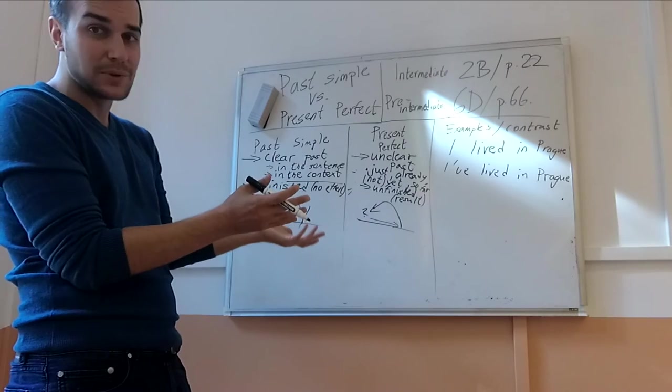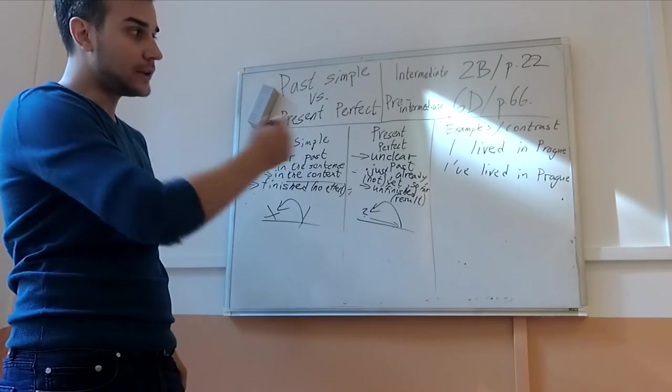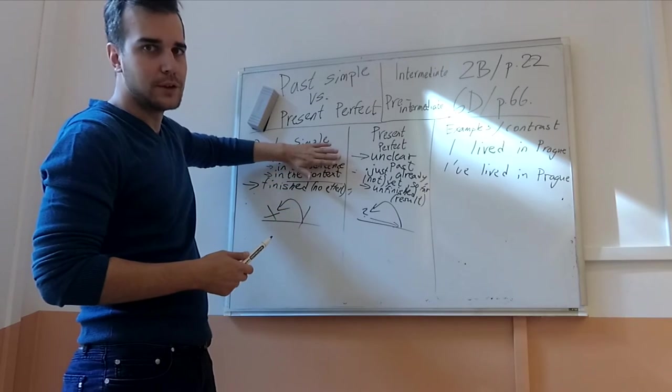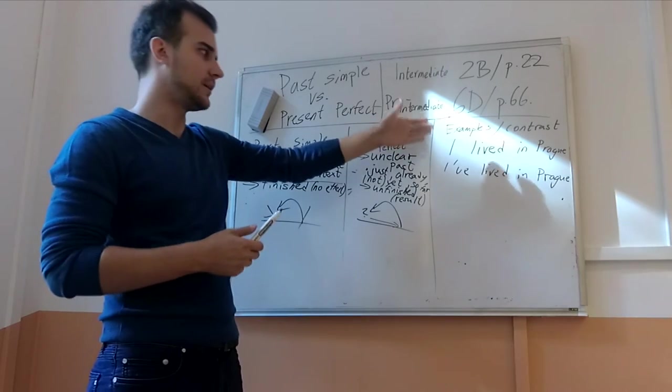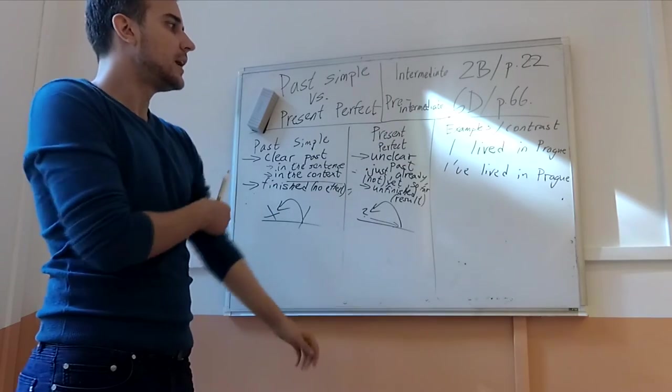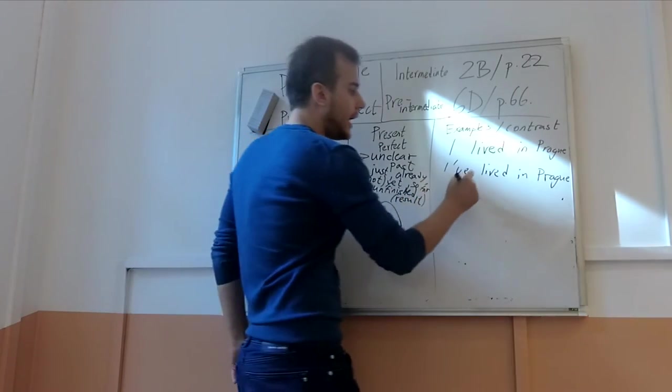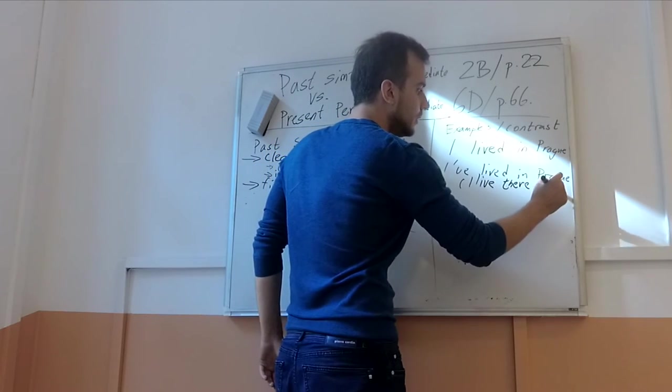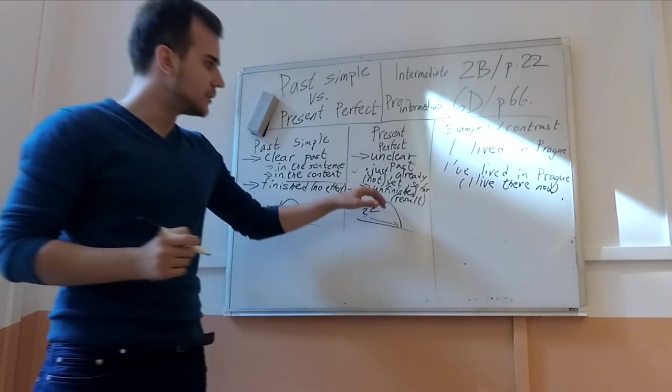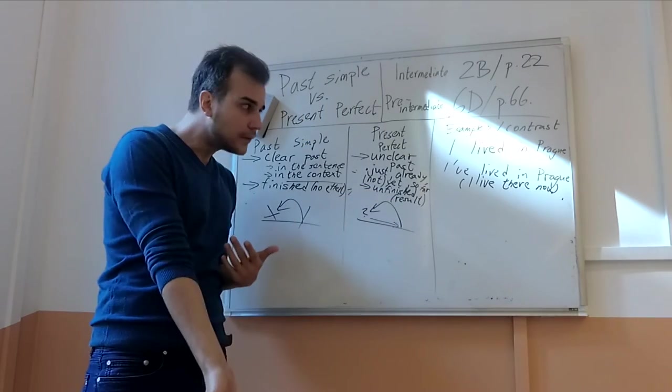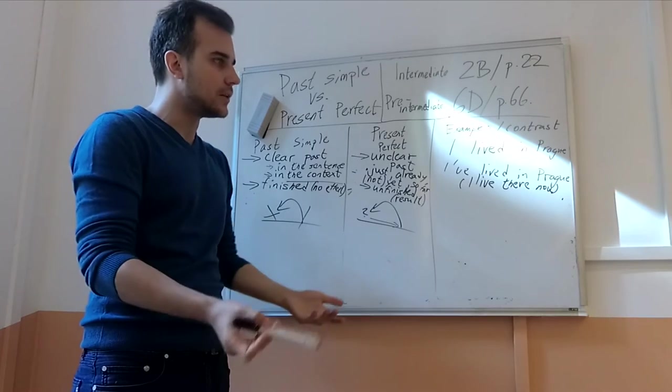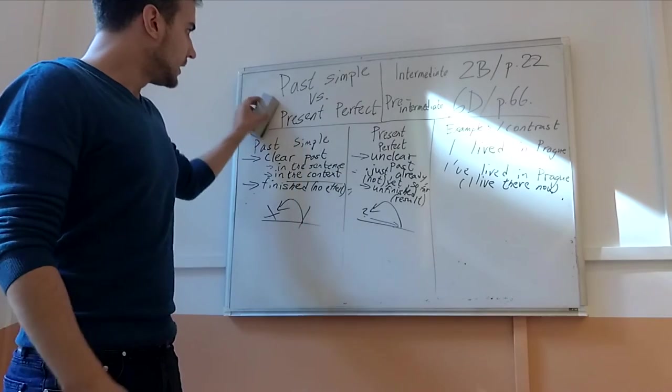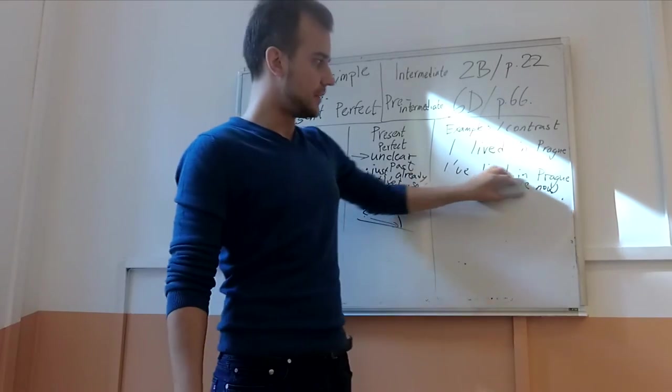Here, I don't really have to know when, because I know it is finished. If I know it is finished and it doesn't continue, I don't really need to tell you the clear past. But I don't know when exactly. And if I say I have lived in Prague, that means I live there now. So as I told you, there is some kind of result. It is unfinished. The result is I live there now.